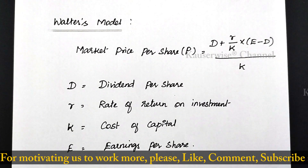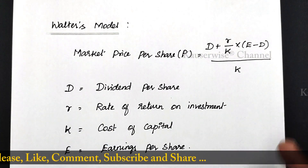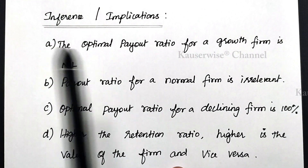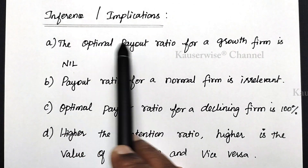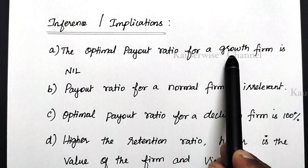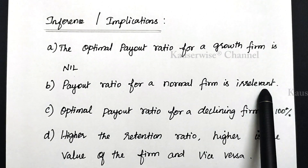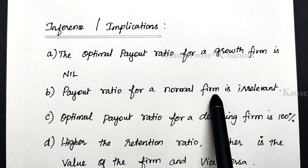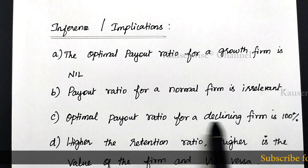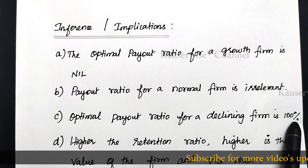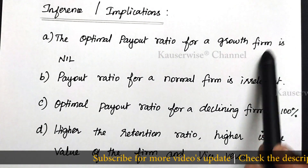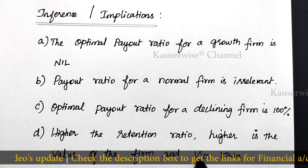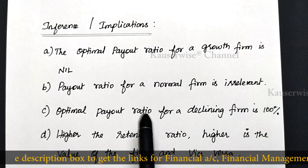Based on certain assumptions only you can derive the market price according to Walter's model. The implications of Walter's model are: first, the optimum payout ratio for a growth firm is nil — that is, the payout should be 0%. Second, the payout ratio for a normal firm is irrelevant — whatever may be the payout ratio, that is not going to affect the normal firm. Third, the optimal payout ratio for a declining firm is 100%. Also, higher the retention ratio, higher is the value of the firm, and vice versa.